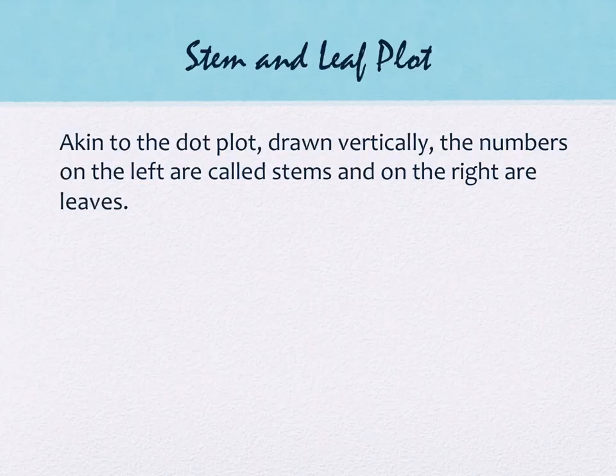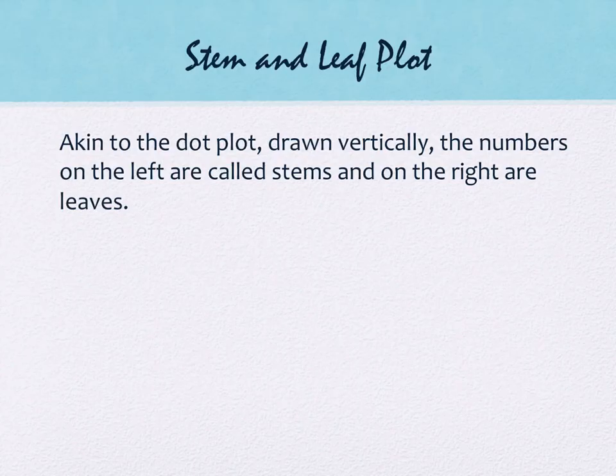The next one is called a stem and leaf plot. It's akin to the dot plot but drawn vertically. The numbers on the left are called stems and the numbers on the right are called leaves. This works really well for two-digit data — like our previous weight example or grades, since most grades are two-digit numbers. Our example uses grades.